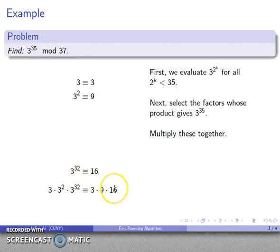That's 3 by 9 by 16. And after all the dust settles, 432. Knock it down mod 37. And collect the exponents. 3 to the power 35 congruent to 25.